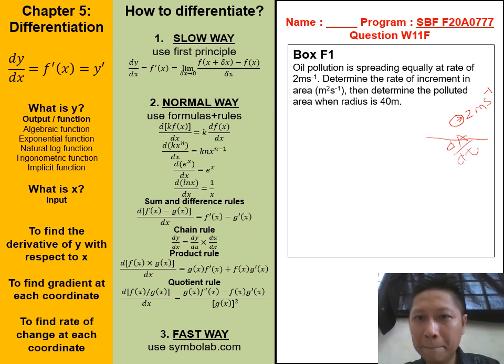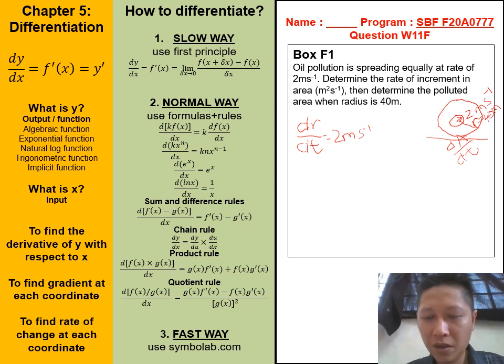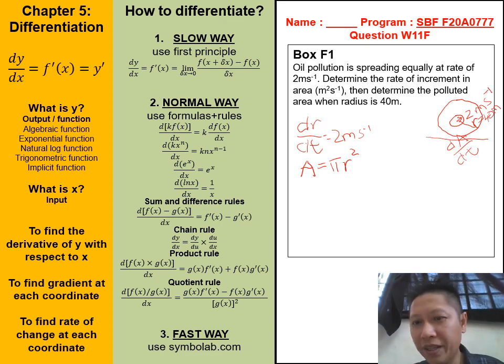We are given the information. The rate is 2 meters per second. And then based on the general formula between the area and the radius, it is defined as A equals to pi r squared. We don't have much clue yet. But why don't we do the differentiation between the area and the radius.